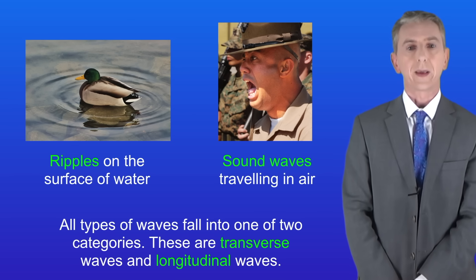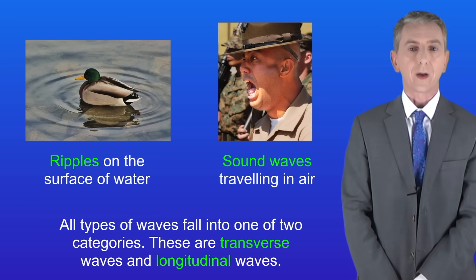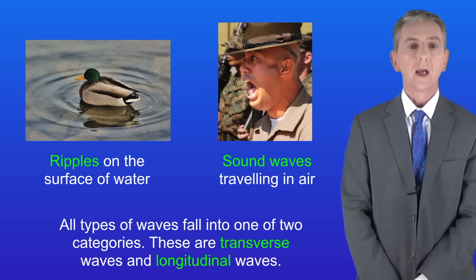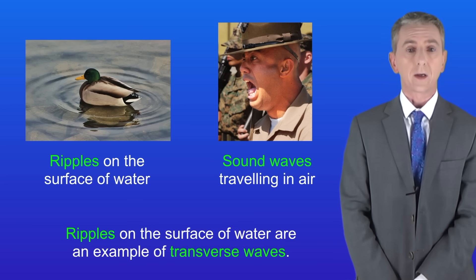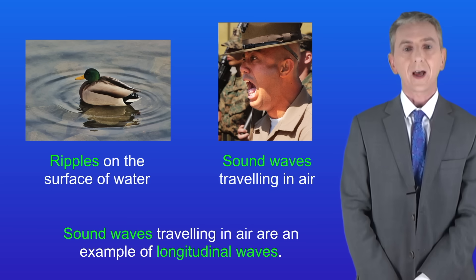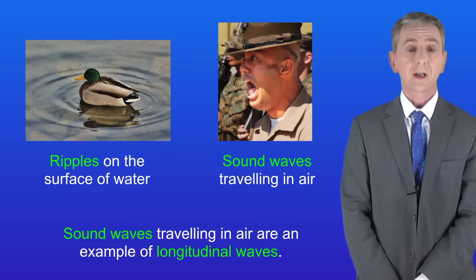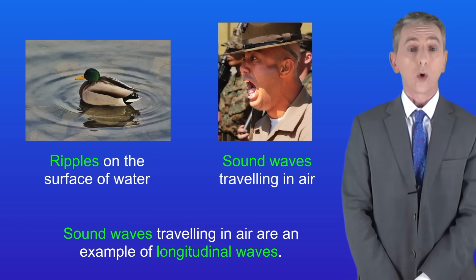Here are two examples of waves: ripples on the surface of water and sound waves traveling in air. All types of waves fall into one of two categories — transverse waves and longitudinal waves. Ripples on water are an example of transverse waves, whereas sound waves traveling in air are an example of longitudinal waves. Remember that all waves are either transverse or longitudinal.